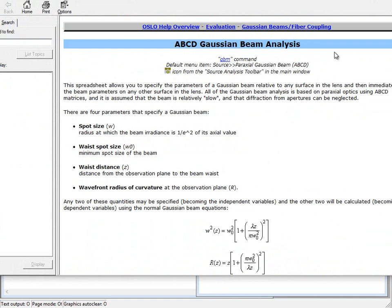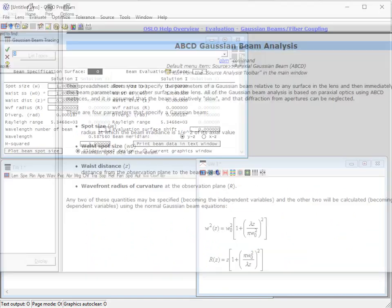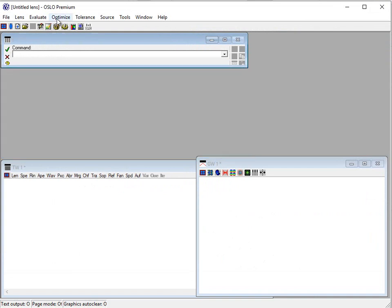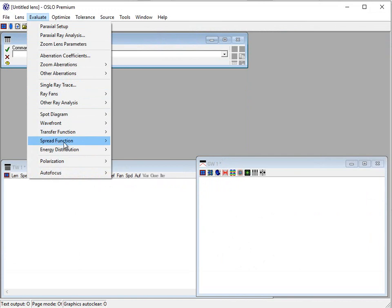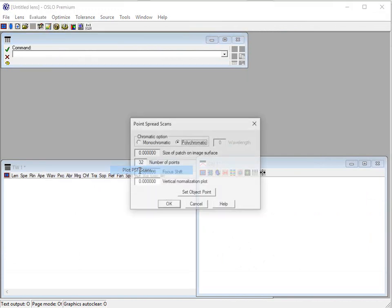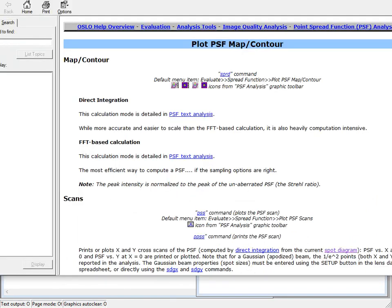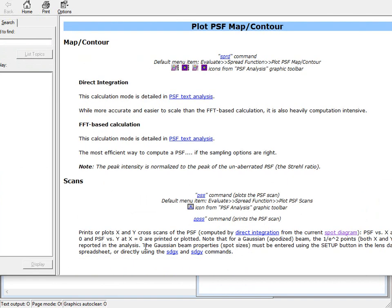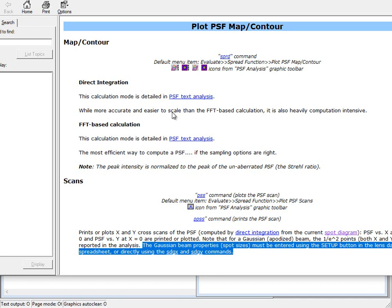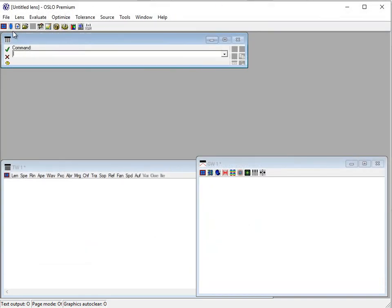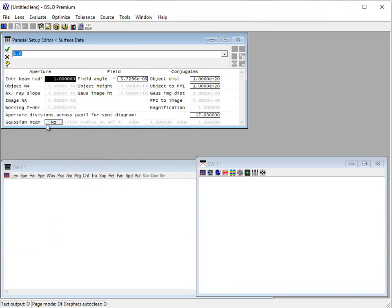You could also of course type in ABCD Gaussian beam analysis into the search. The other thing we're going to do in this set of videos is we're going to use the point spread function tool. So here if we go to plot point spread function scans and we hit help here. This one because that window pops up it switched out so I have to come back here and I'm just going to emphasize this thing down here at the bottom. When you actually run this command you have a choice. There are Gaussian beam properties that need to be entered in setup if you're going to be modeling a Gaussian beam which is what we're going to do. And if we were to go here I'm going to open the lens spreadsheet editor and then the setup you can see down here there's these Gaussian beam properties and you can look that up in help as well.